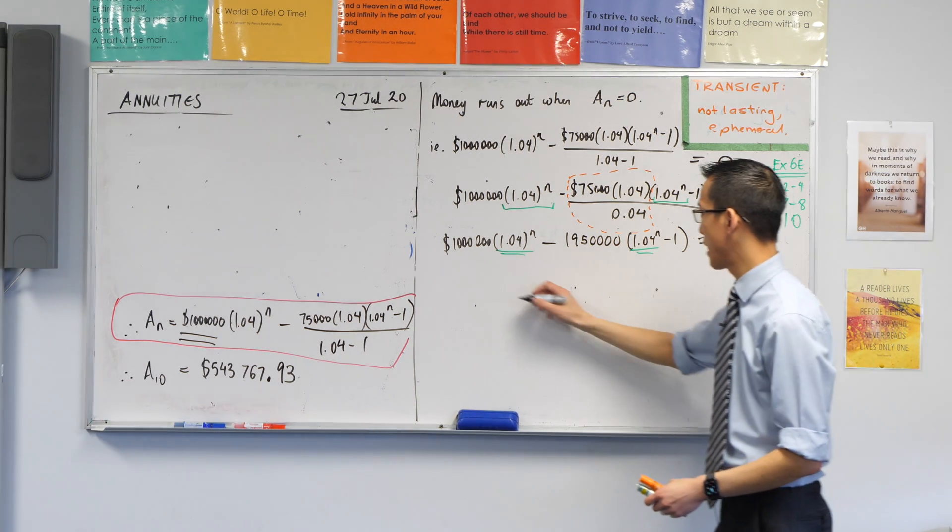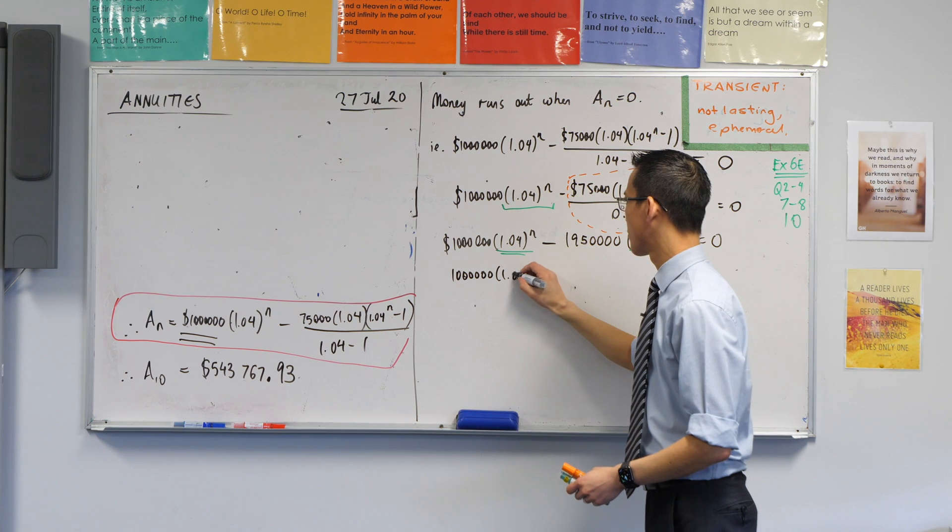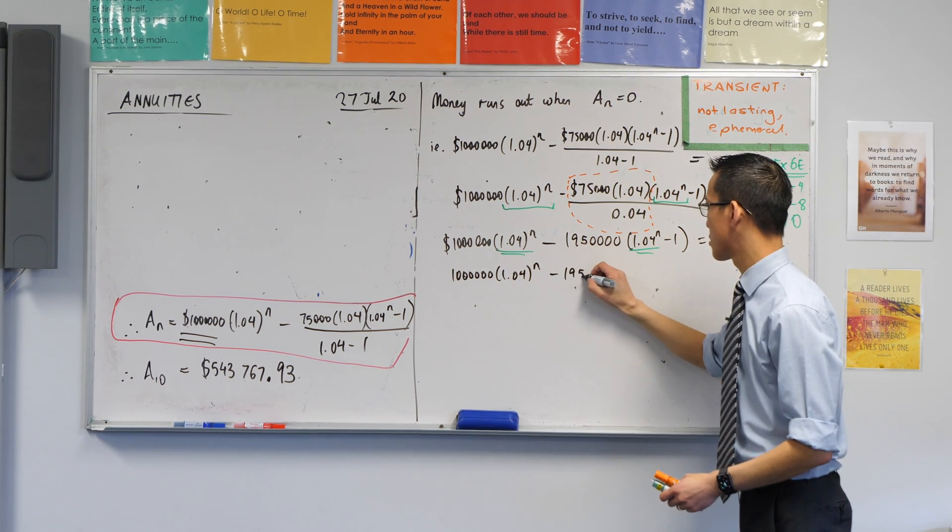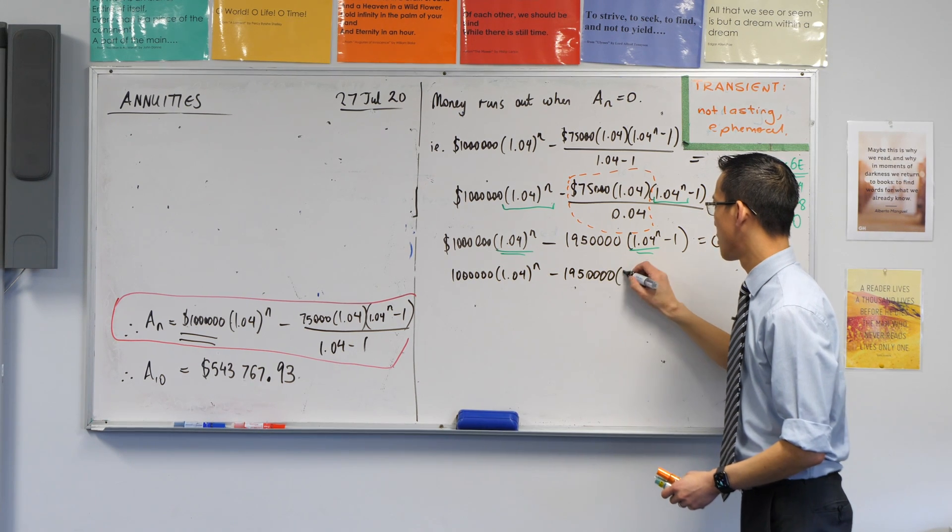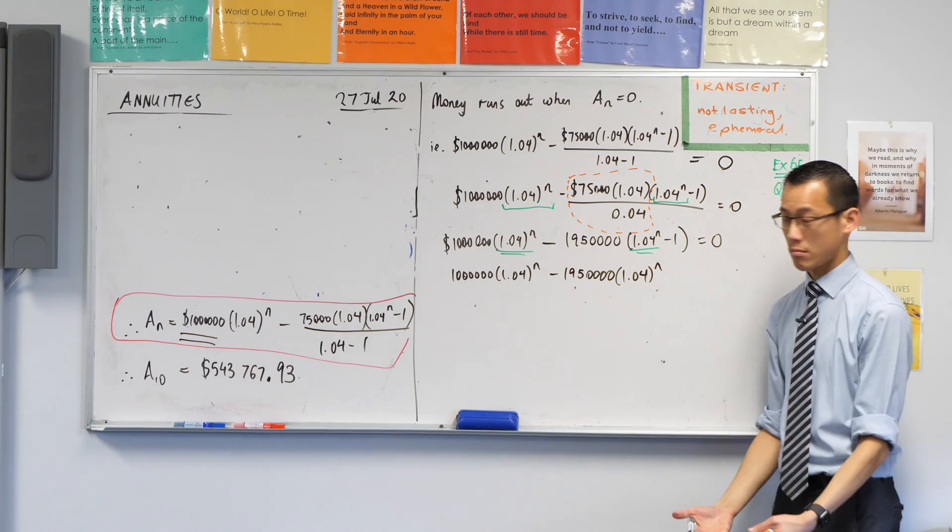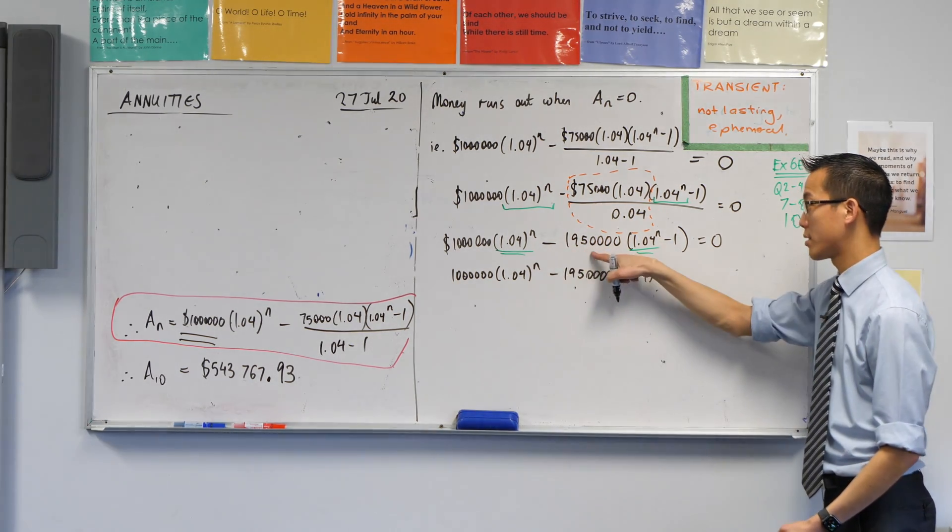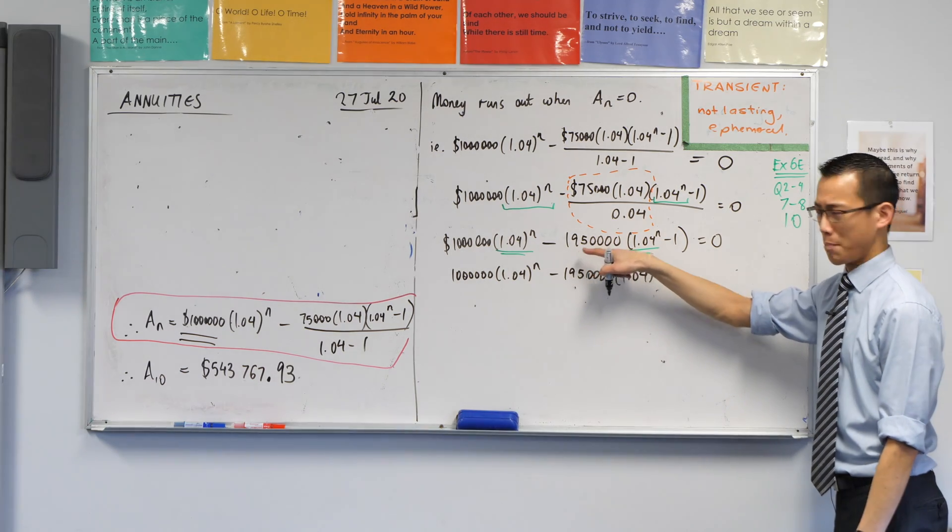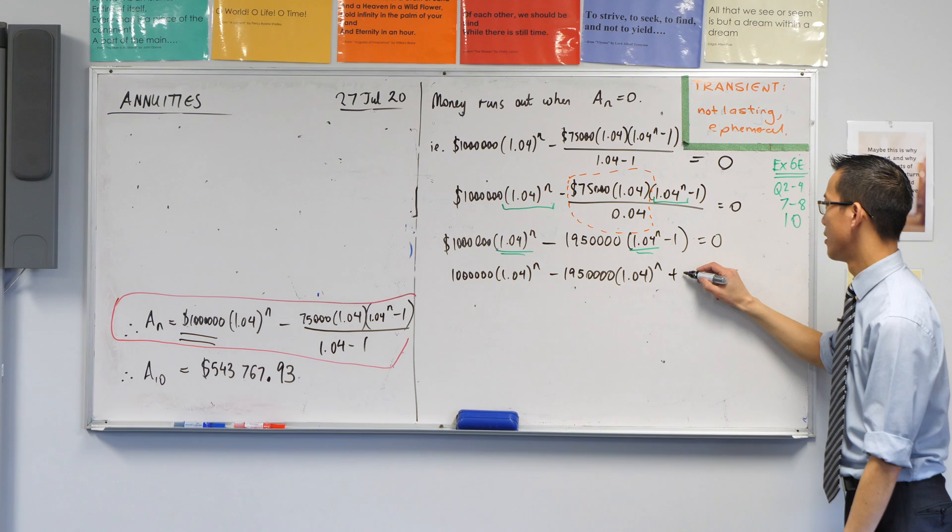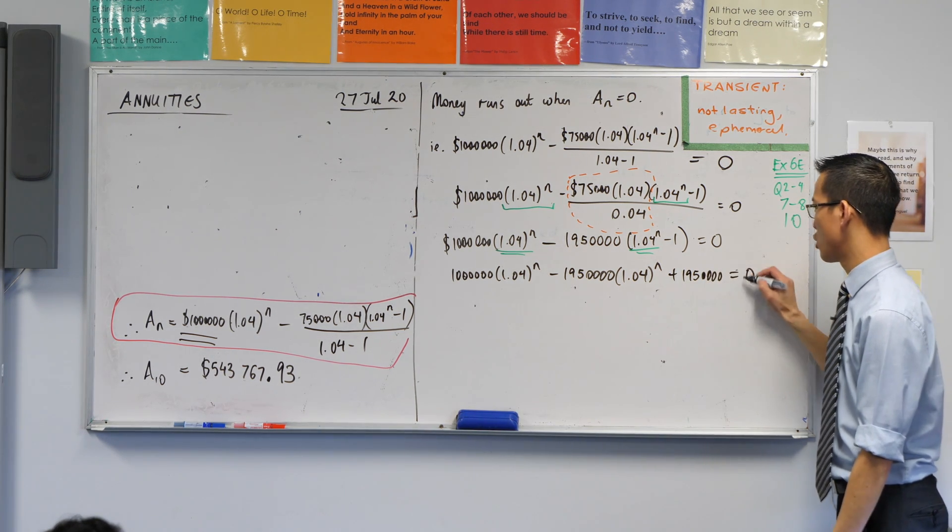Like so. And then I'm going to minus this. That's how many other lots of it that I have. Is that okay? I've done this part and then I've got, watch for the double negative, minus 1.95 million times minus 1, so it'll be plus 1.95 million, right? Equals 0.